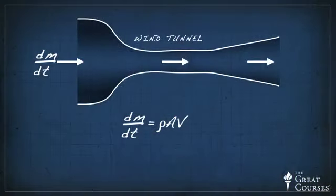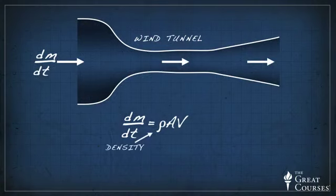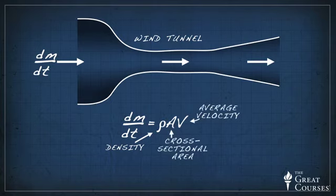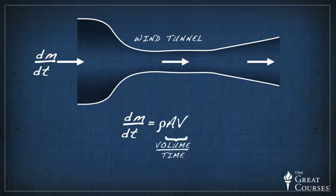Let's start with applying conservation of mass to a wind tunnel. The amount of mass flowing into the wind tunnel per unit time is equal to the density of air times the cross-sectional area of the wind tunnel times the average velocity across the cross-sectional area.